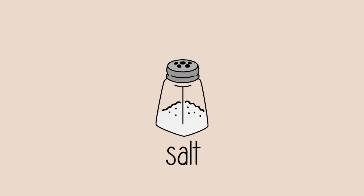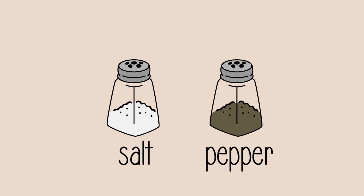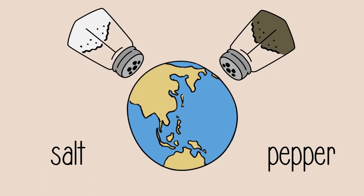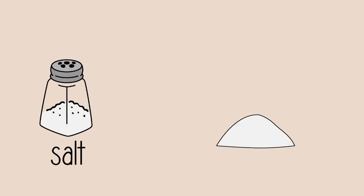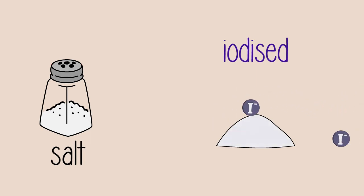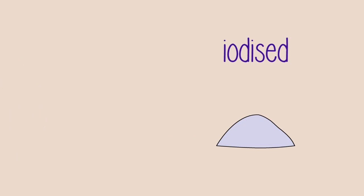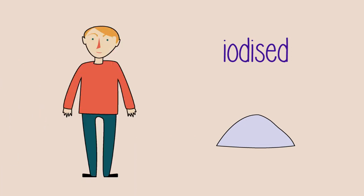Regular table salt is used worldwide as a flavor enhancer. In fact, salt and pepper are the two most common condiments anywhere in the world. Most salt for consumption is iodized, meaning that iodide ions have been added. This iodized salt helps to prevent the enlargement of the thyroid glands, a medical condition known as a goiter.